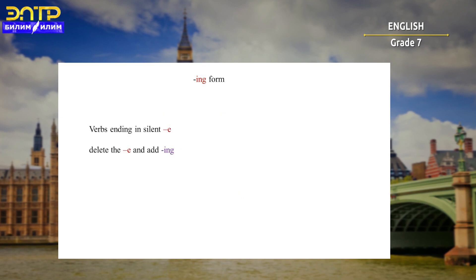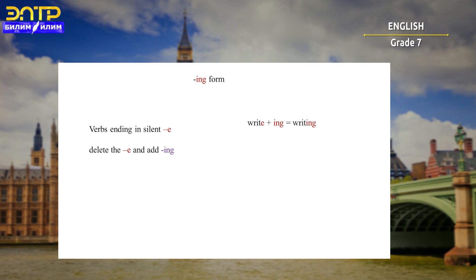The next rule about ING form is verbs ending in silent E — which means when we don't hear this E at the end of a verb, we need to delete the E and add ING. For example, 'write' ends with a silent E. We delete the E and add ING — we get 'writing'. 'Observe' plus ING will be 'observing'.